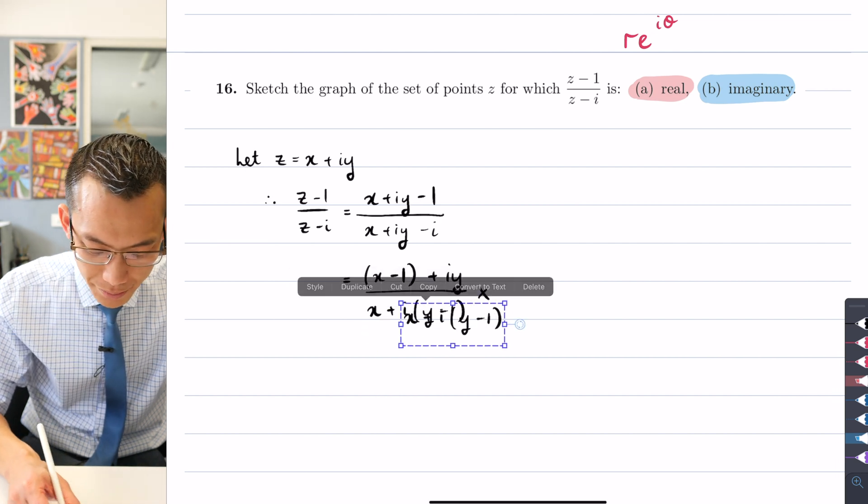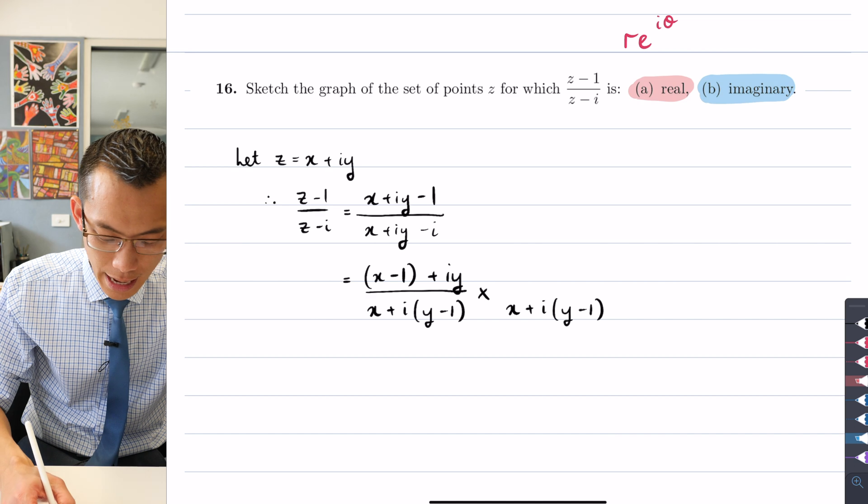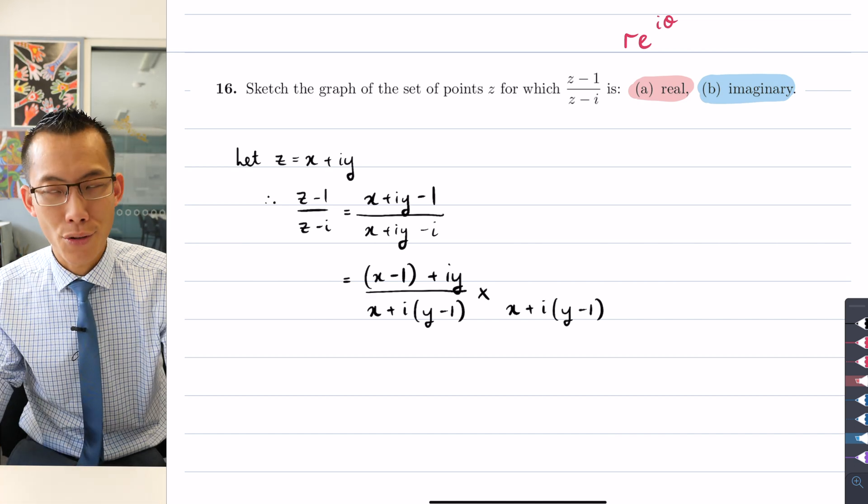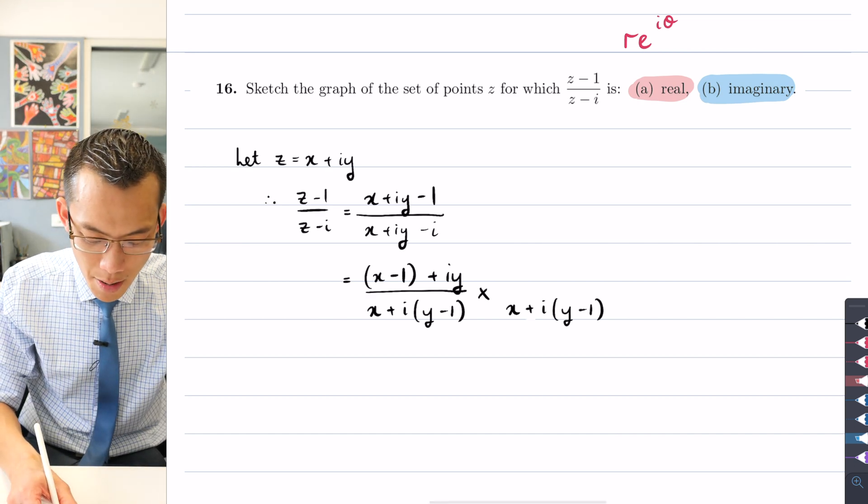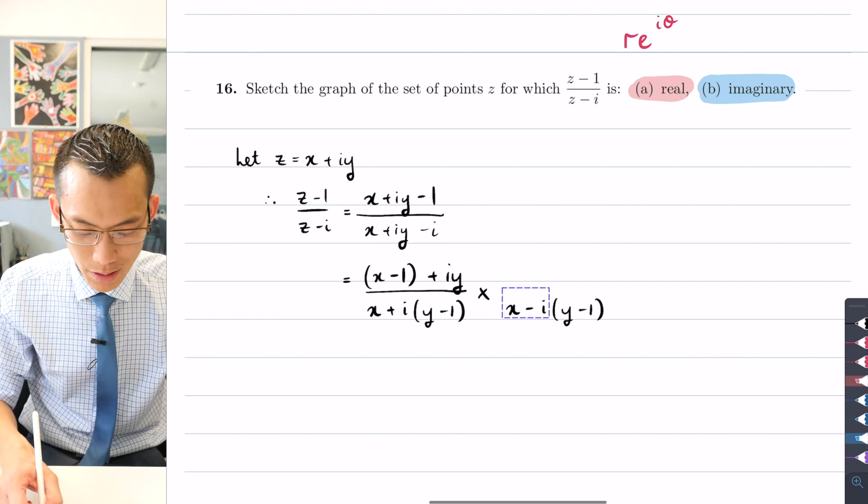Now this makes it much easier for me to identify what the conjugate should be, because when you take this term here, all you need to do is take that plus i(y - 1) and turn it into a minus i(y - 1).